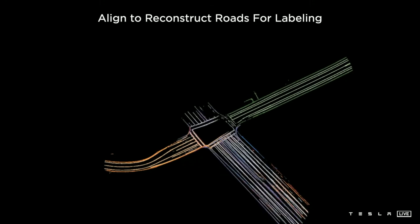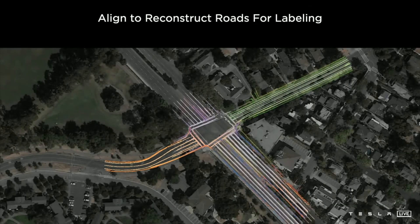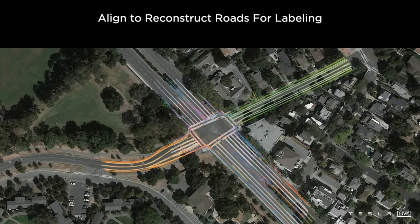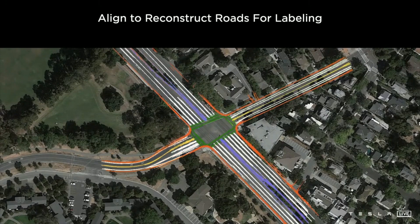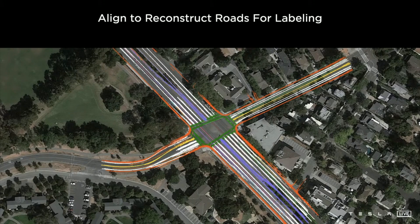These 16 different trips are organized and aligned so that all of them agree with each other and also agree with all of their image-based observations. Together, this produces an effective way to label the road surface, not just where the car drove, but also in other locations it hasn't driven yet. The point of this is not to build HD maps — it's only to label the clips through these intersections, as long as the labels are consistent with the videos they were collected at.